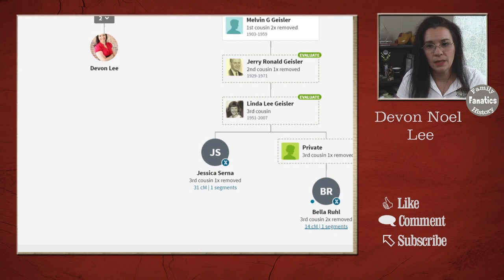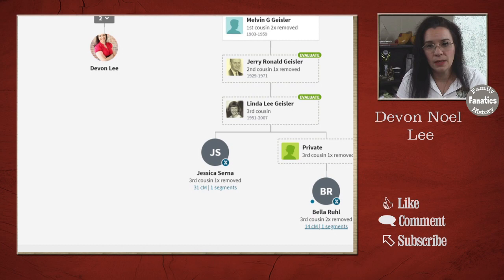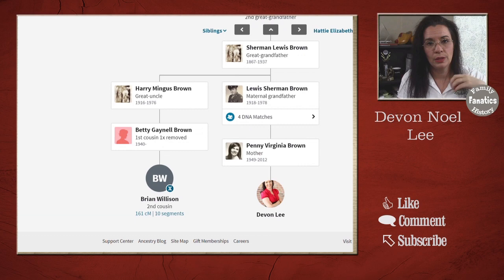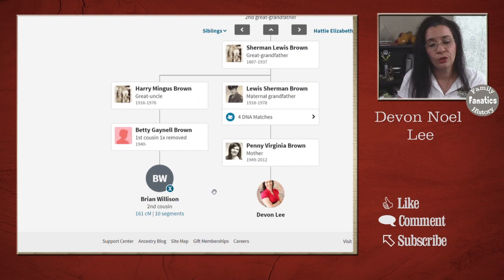So what would I like to see improved on the DNA match linking tool for me to be jumping up and down and say, this is the best thing ever. One of the things I would like to see is that we have these through lines. And if this is going to be an awesome tool, it really needs to feed into the through lines. What I would really like to see is that if you do this extra linking, that those people should show up on your through lines no matter where they are.